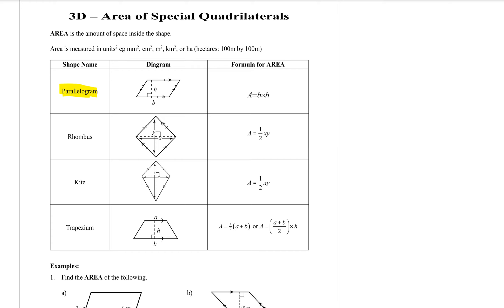To find the area of the parallelogram you need to know the base and what we call the perpendicular height, which means that the two sides should be connected by a right angle, even though the height is not actually that sloping height of the parallelogram. The formula is base times height, which is pretty much just like a rectangle.